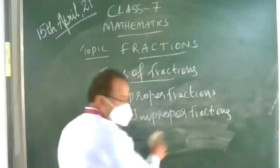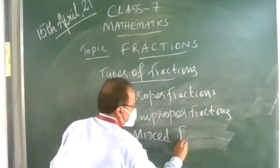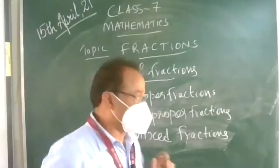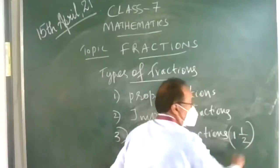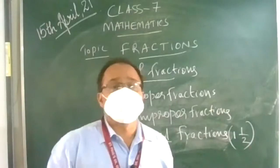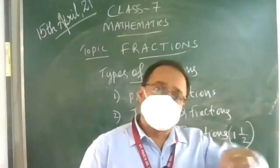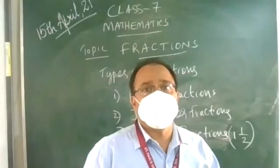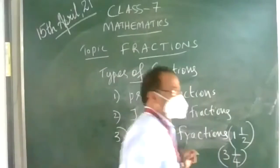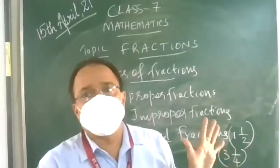Then, mixed fractions. For example, 1 and 1 upon 2 — it has a complete whole number along with a fraction. So, the value of a mixed fraction is always greater than 1, because there will be a whole number followed by a fraction, for example 1 and 1 upon 2, or 3 and 1 upon 4, etc. This is the simple classification of fractions on the basis of numerator and denominator.